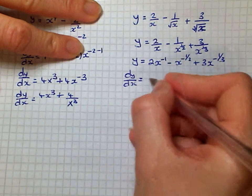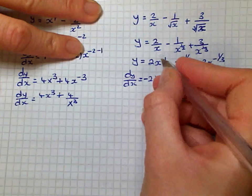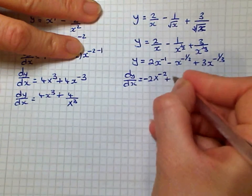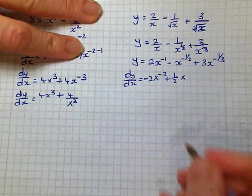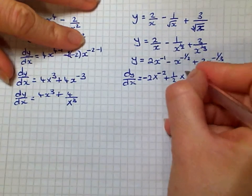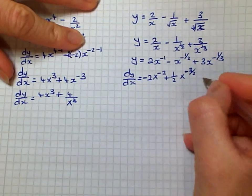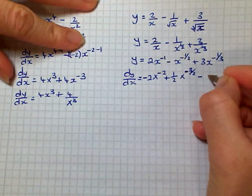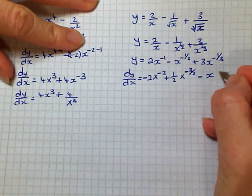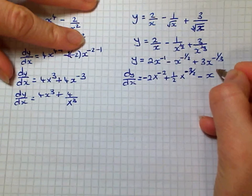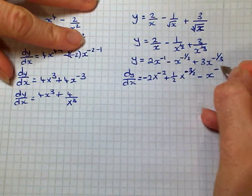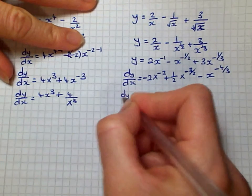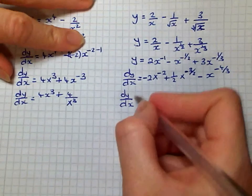So dy/dx: differentiating gives 2 times minus 1, which is minus 2, x to the power of minus 1 minus 1, which is minus 2. Then minus a half times a minus gives plus a half, x to the power of minus a half minus 1, which is minus 3 over 2. And plus 3 times minus one third is minus 1, so minus x to the power of minus one third minus 1, which is minus 4 over 3.